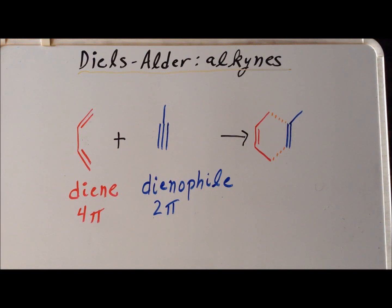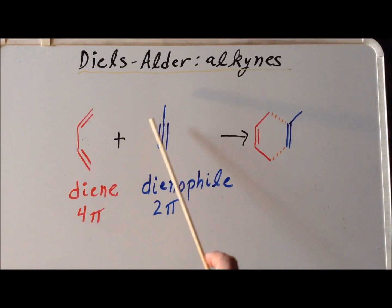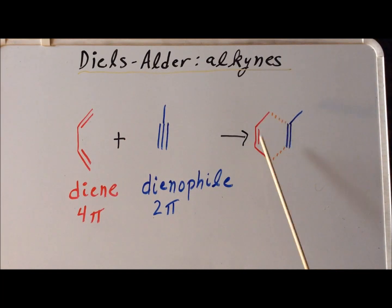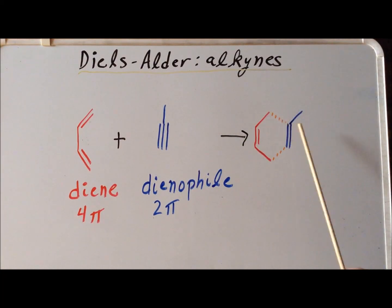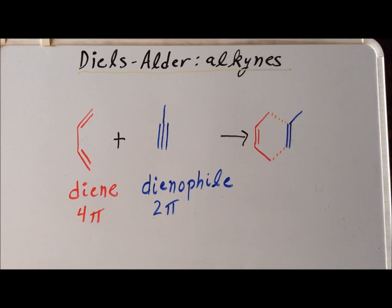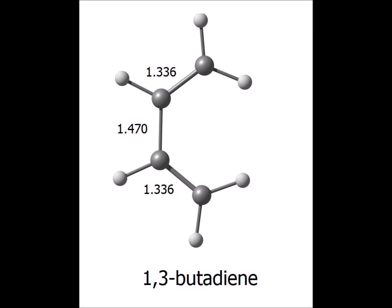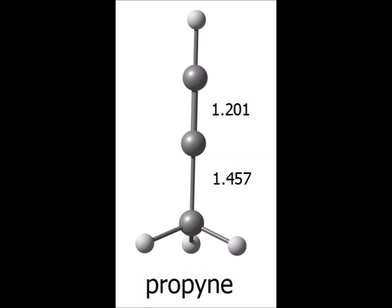For our next example involving an alkyne as the dienophile, we replace acetylene with propyne. As before, the triple bond of the alkyne is reduced in order to a double bond, but now we also have an additional methyl substituent which ends up becoming a substituent on the ring, giving us 1-methylcyclohexadiene. The dienophile for this reaction is the 3-carbon alkyne, propyne.